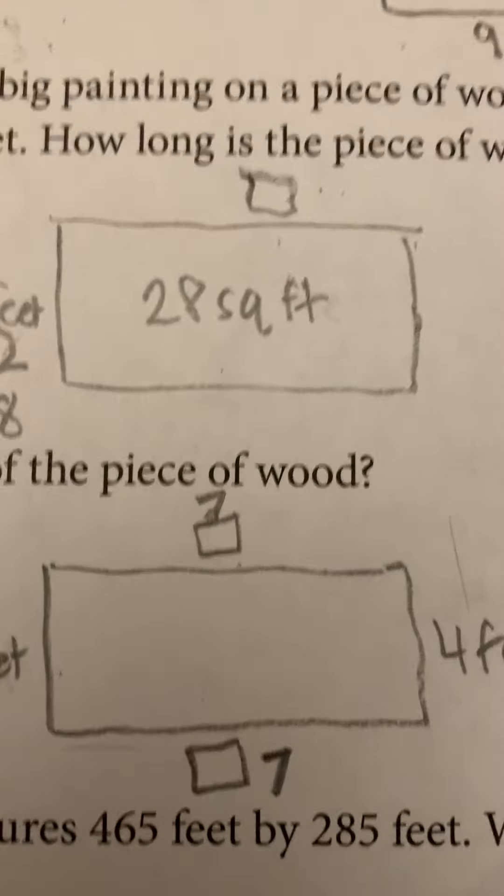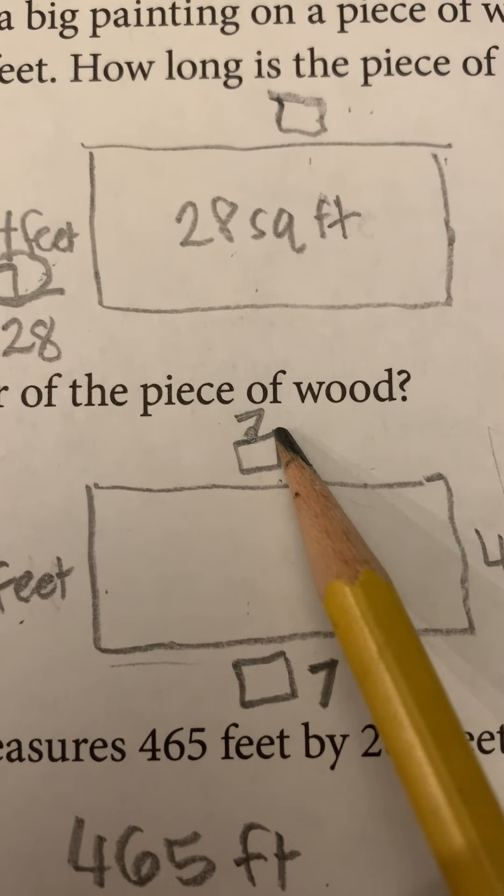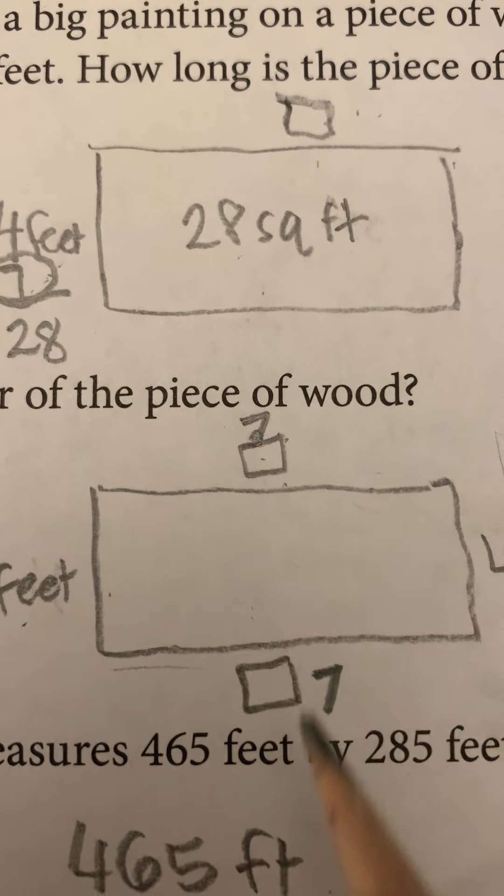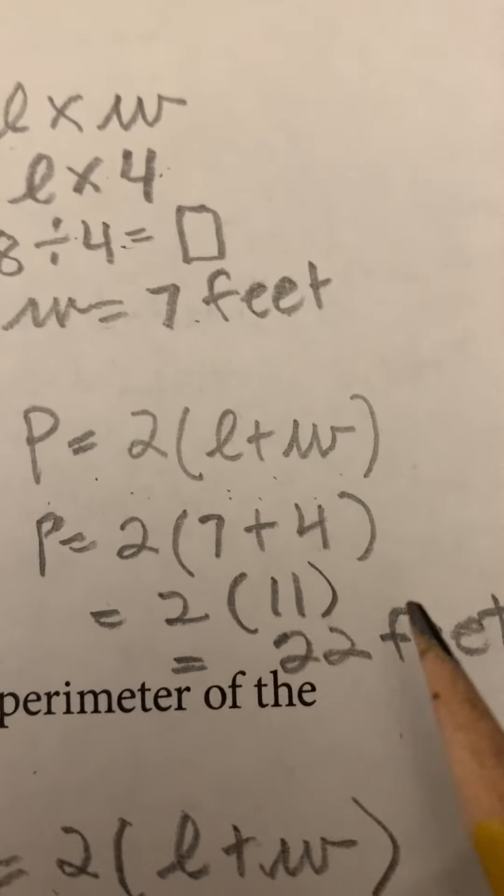Then what's the perimeter? Again, I'm using my information from the problem that I solved above. So if this is seven, this side is seven. This is four. This side is four. Then I use my formula.